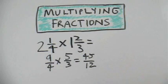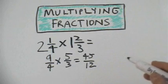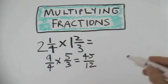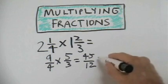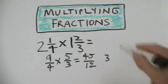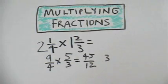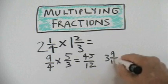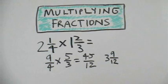To make this into a mixed number, we would ask ourselves, how many times does twelve go into forty-five without going over? In this case, it's three times. Since twelve times three is thirty-six, we have nine left over. And we keep twelve as our denominator.